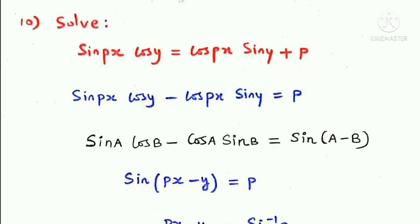Next question: solve sin(px)·cos(y) = cos(px)·sin(y) + p. Rearranging gives sin(px)·cos(y) - cos(px)·sin(y) = p. Using the formula sin(A-B) = sinA·cosB - cosA·sinB, the left side becomes sin(px - y) = p.